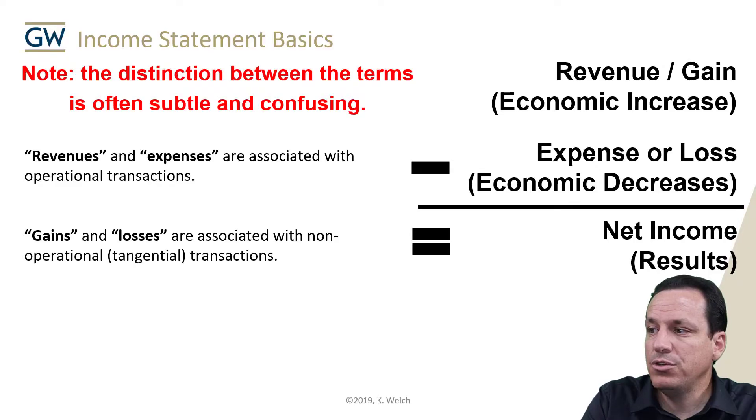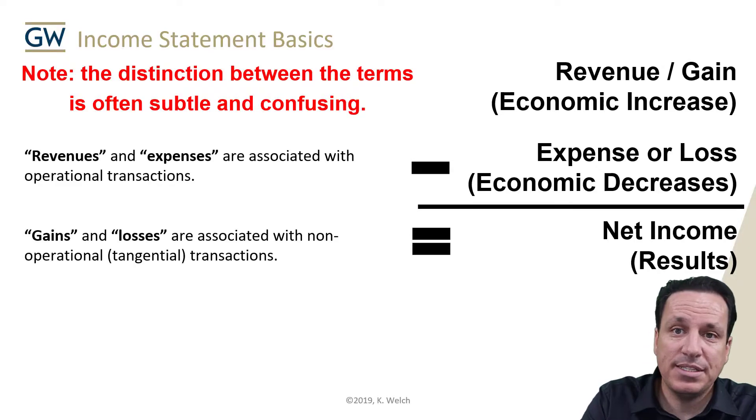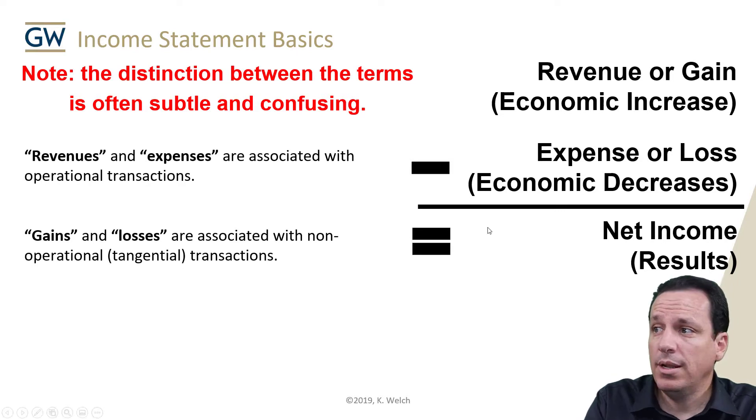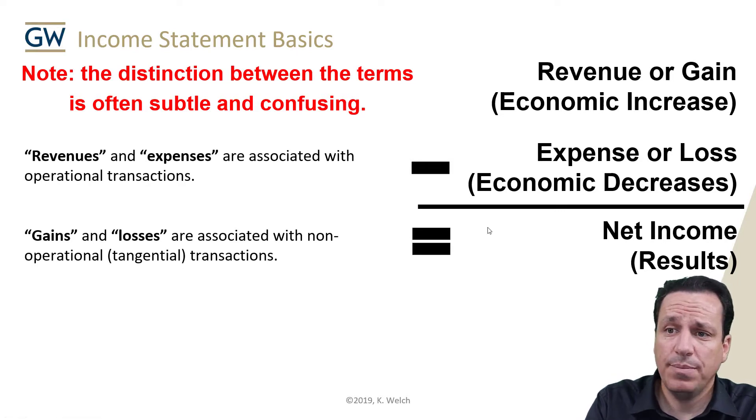We're going to walk through some different examples of named accounts. A lot of you have questions about what to name an account and what things should be named, so this is to help you with that labeling process. Revenues, gains, expenses, and losses — note the distinction between these two. Revenues and gains are not the same thing. Expenses and losses are not the same thing.